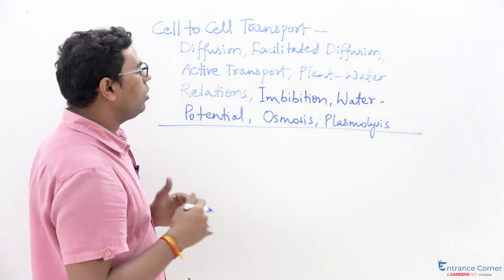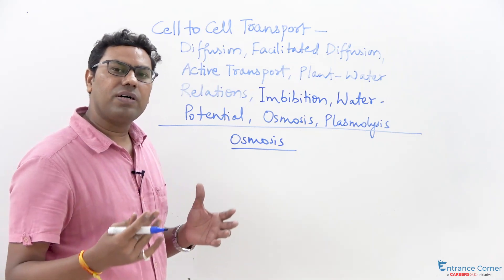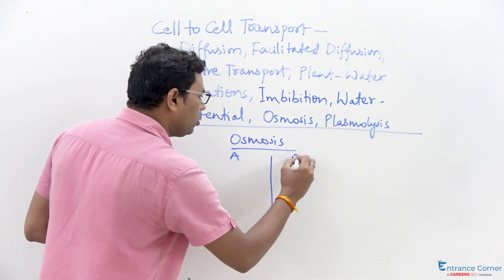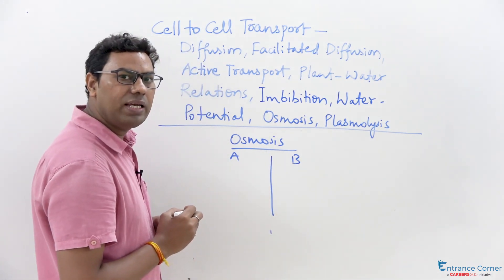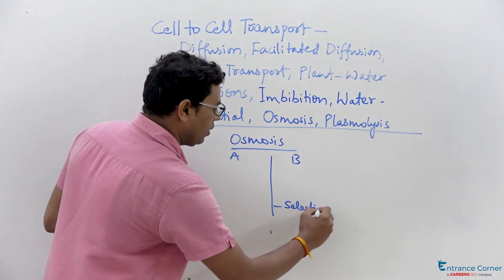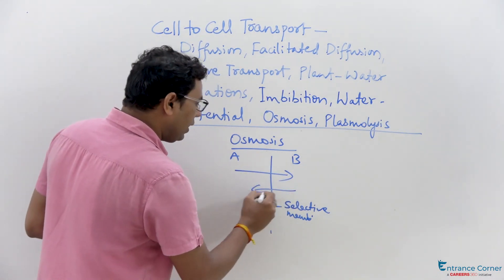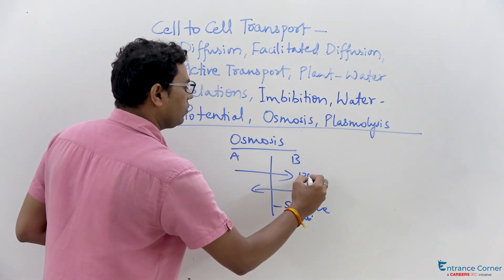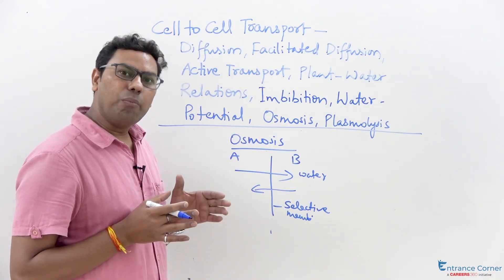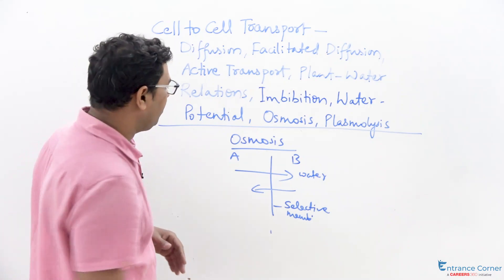Osmosis is basically a type of diffusion of water across a certain kind of membrane. Suppose there are two areas, A and B, demarcated by a selectively permeable membrane. The movement of water from A to B or B to A across this selectively permeable membrane is called osmosis. Osmosis is completely based upon the concentration gradient but specifically across this selectively permeable membrane that allows water molecules to move from one direction to another.